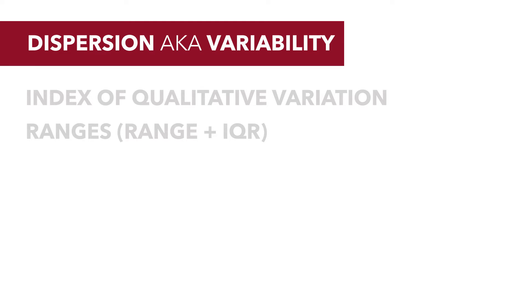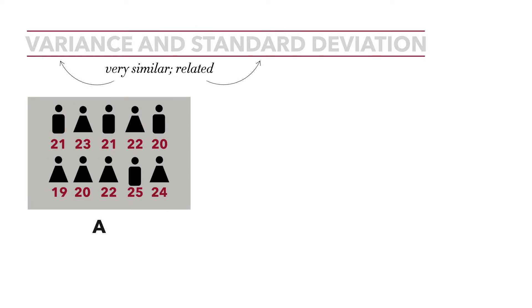In this tutorial, we'll talk about the final measure: variance and standard deviation. Variance and standard deviation are very similar. They're related, and we're going to talk about them in one video because you'll see how related they are. We're going to calculate the variance and standard deviation for the variable age that was collected on 10 students from statistics class.